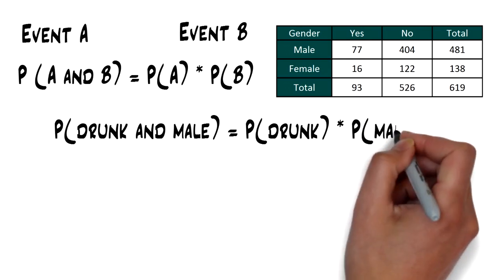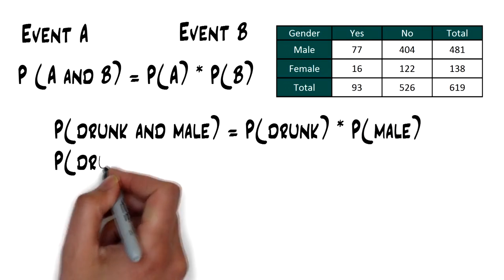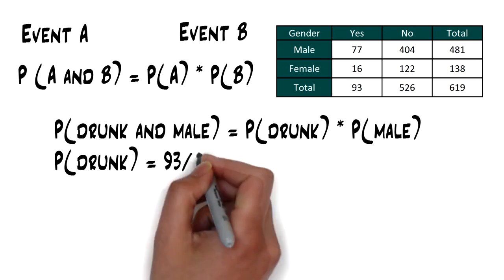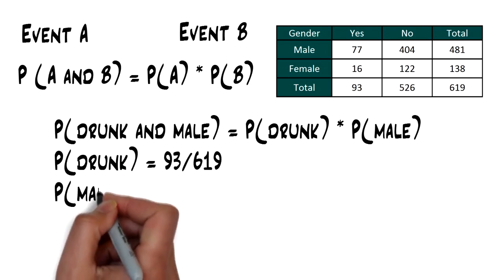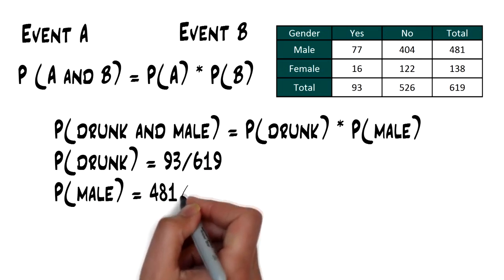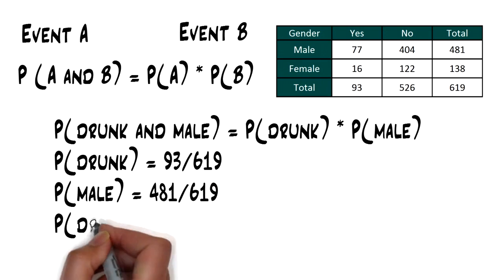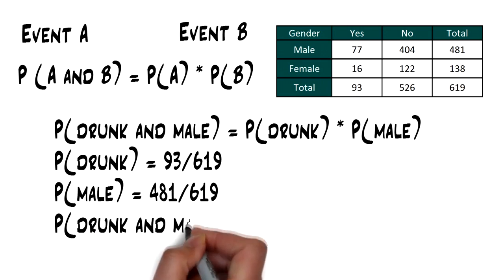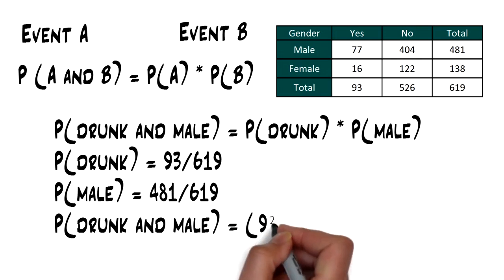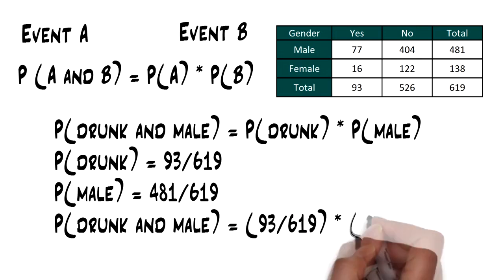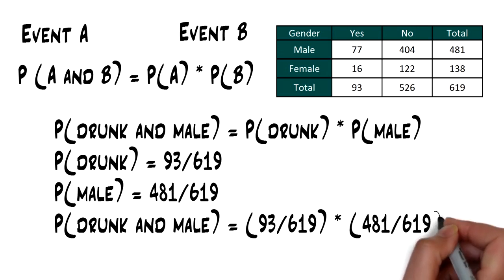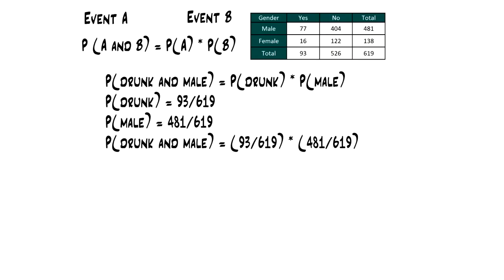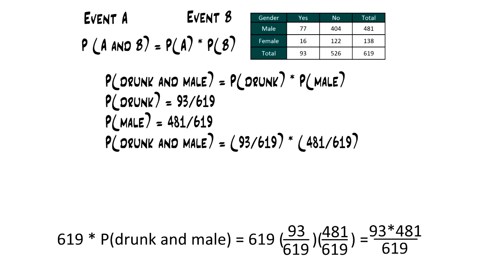By dividing the counts in our table, we see that the probability of being drunk is equal to 93 divided by 619, and the probability of being male is 481 divided by 619. So, the probability of being drunk and male is 93 divided by 619 times 481 divided by 619. Therefore, since there are a total of 619 drivers, if drunk driving and gender were independent, the count of drunk male drivers that we would expect to see are the following, circled here in red.